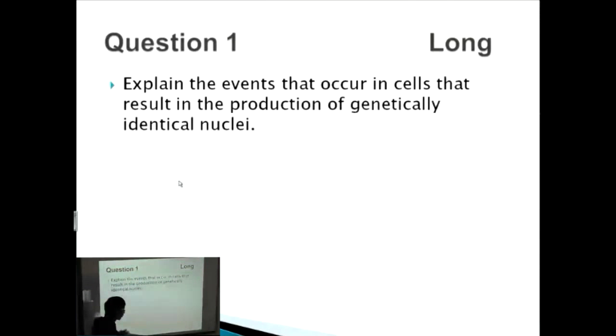This is a long question. A long question means that usually you want at least about eight points, if not nine points, to get the full amount of marks. So let's get started here. The first thing that we want to know, we want to talk about is how do we get genetically identical nuclei.